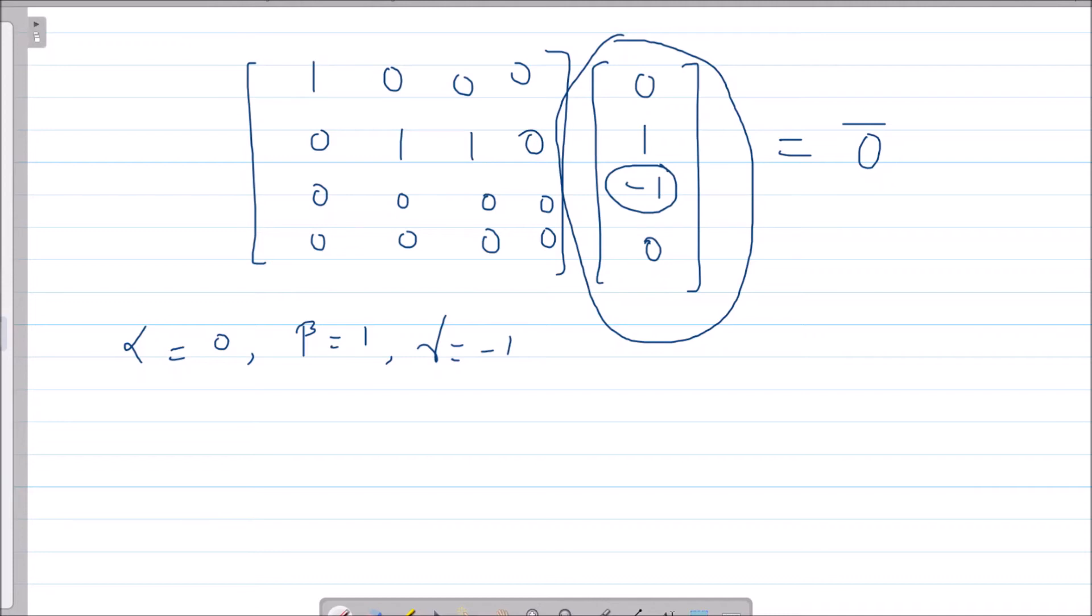All conditions are satisfied: R is RREF, the third column is [0, 1, 0, 0], and Rx = 0, but γ ≠ 0. Therefore, statement P is false.